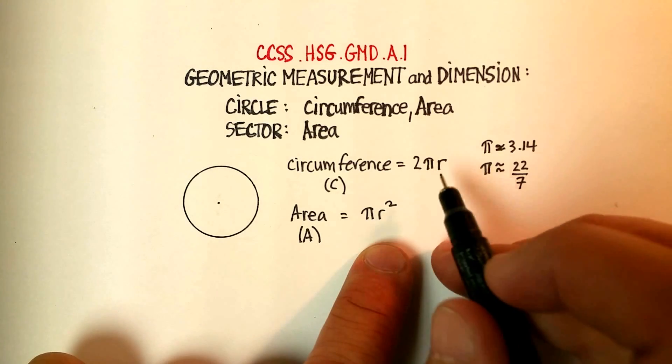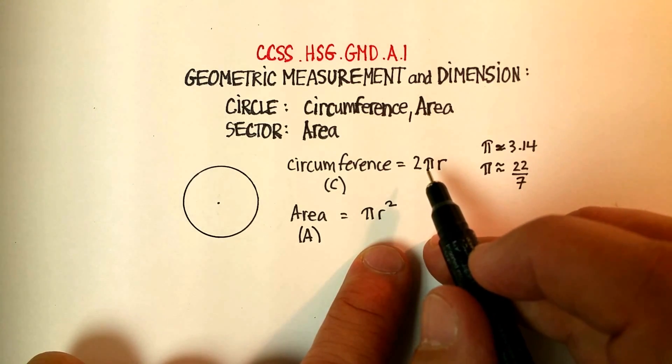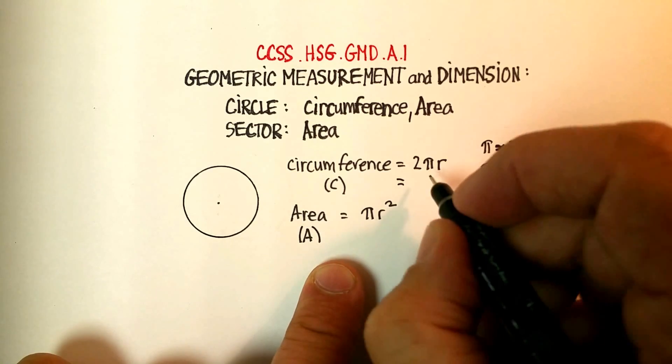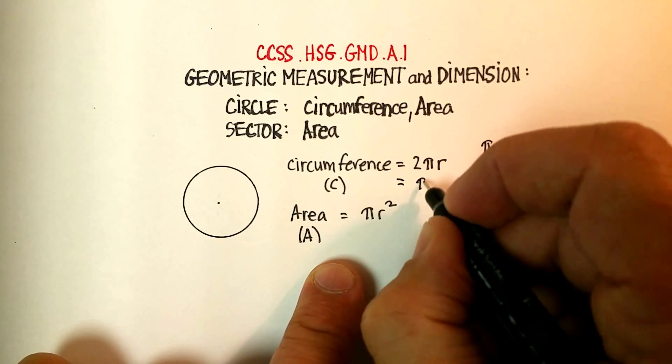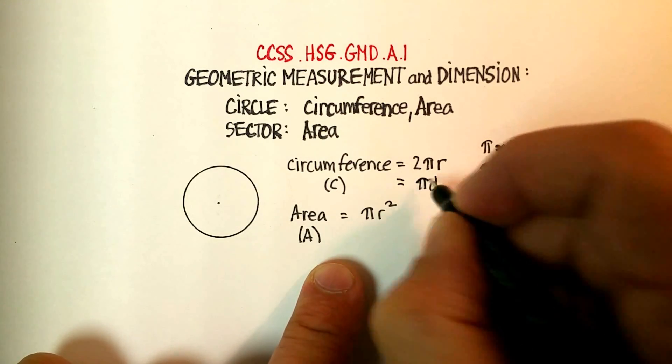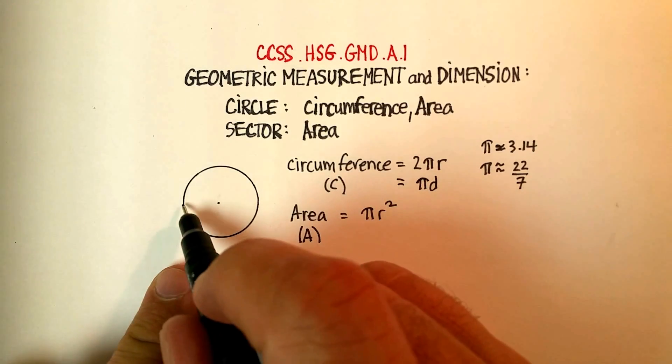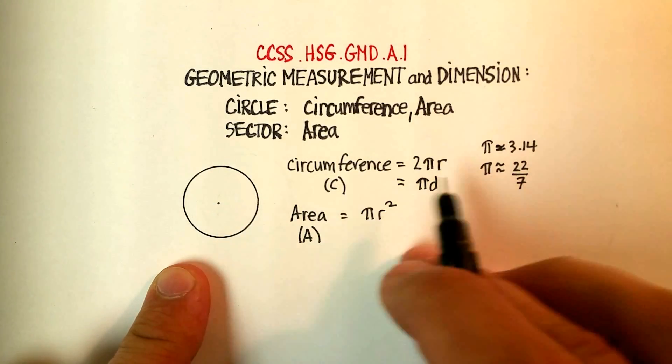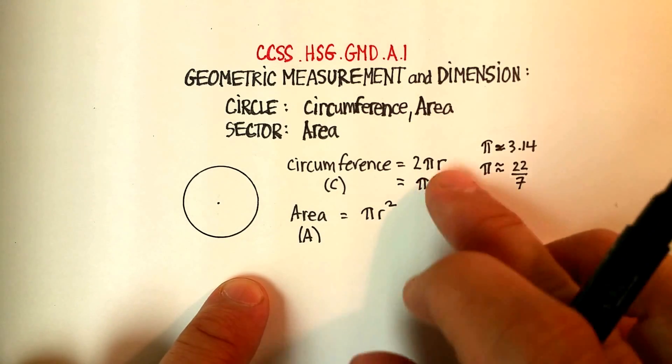Actually I should have given you another definition for circumference, and the other formula for that is just π times d, which is the diameter, because remember the diameter is just basically 2 radii. So both of those would work.